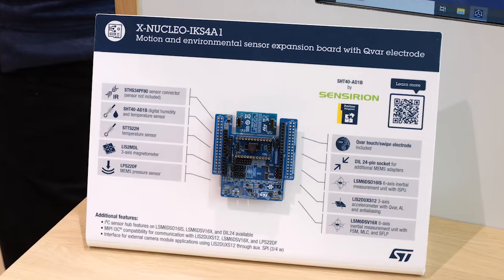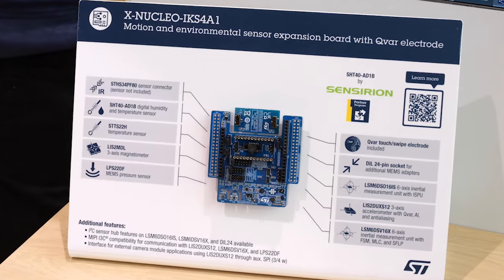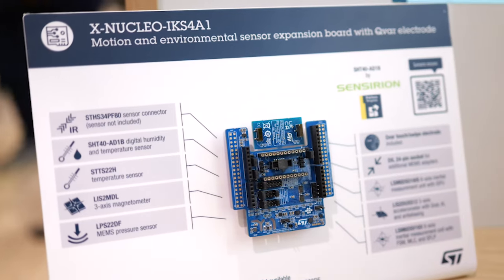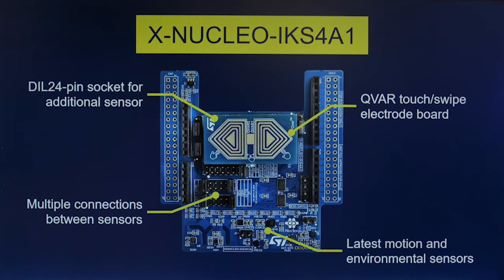It is packed with seven of the latest sensors. To list some of them: it has an IMU with an embedded processing unit, an IMU with an embedded sensor fusion block, a high-performance pressure sensor, a temperature and humidity sensor. It also includes a QVAR electrode board for touch and swipe detection, a socket for an infrared sensor, and a DIL24 socket to connect an external sensor.